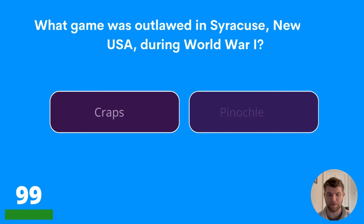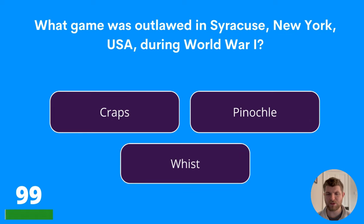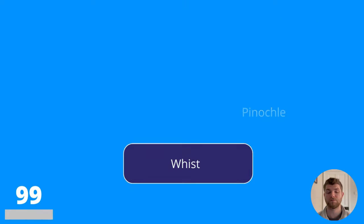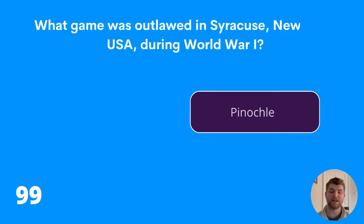Question ninety-nine: what game was outlawed in Syracuse, New York, USA during World War I? Crabs, Pinnacle, or Whist? The answer is Pinnacle.